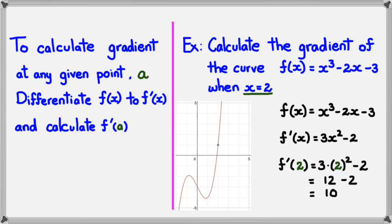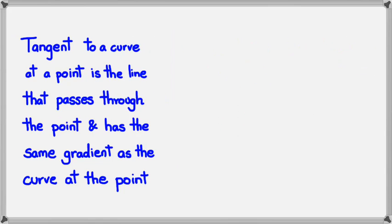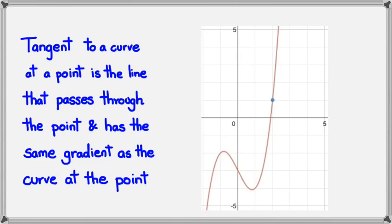Now the next thing we're going to look at is tangent. You can think of tangent to a curve at a point as the line that passes through the point and has the same gradient as the curve at the point. If you remember the last example, we figured out what the gradient was when x = 2 for this function. Now a tangent basically is just a line that is going to have the same gradient as it touches that point. So it's going to look something like this. This blue line right here is a tangent.